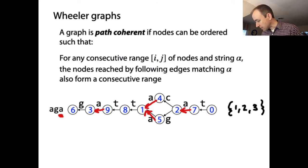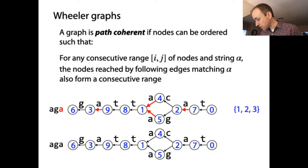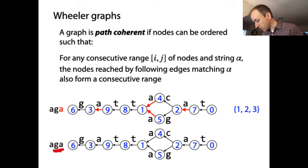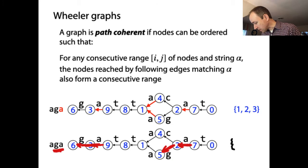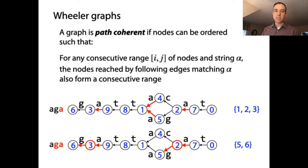Nodes one, two, and three are consecutive. So if we go another step and take the next longer suffix 'ga', starting from nodes one, two, and three, we follow the outgoing edges labeled 'g'. There are two of those paths — one arriving via 'a' then 'g', and another — so the nodes we end up at are five and six. Again, they're consecutive. It appears to be the case, but we want to prove it. The proof is rooted in the Wheeler graph properties from the previous video.